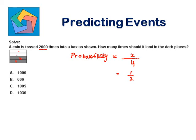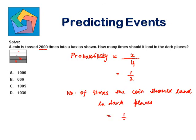It is tossed 2000 times. So the number of times the coin should land in dark places is given as 1 half times 2000, which is equal to 1000 times.